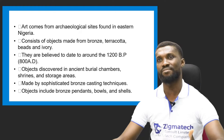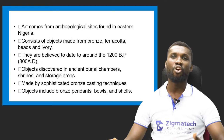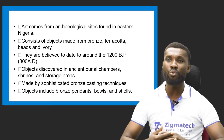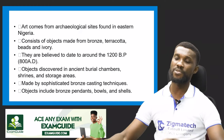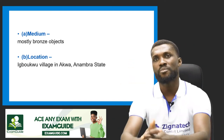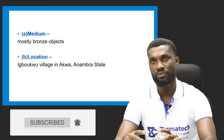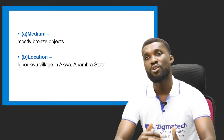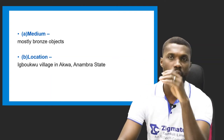Objects were discovered in ancient burial chambers, shrines, and ritual areas, made by sophisticated bronze casting techniques. Other objects include bronze patterns, bowls, and shells. The major medium used by the Igbo-Ukwu people is bronze — the majority of their works are in bronze. Therefore, we regard Igbo-Ukwu artworks as bronze work.